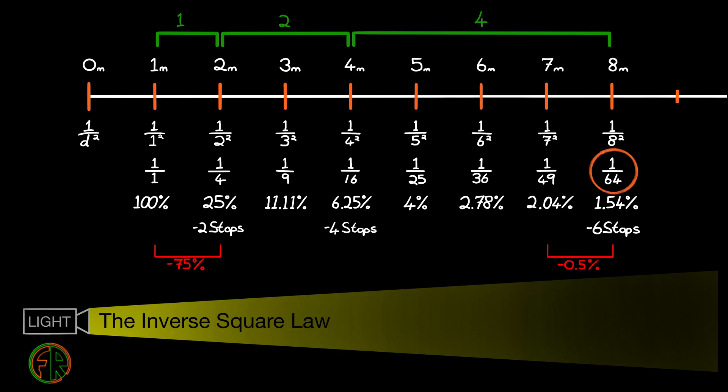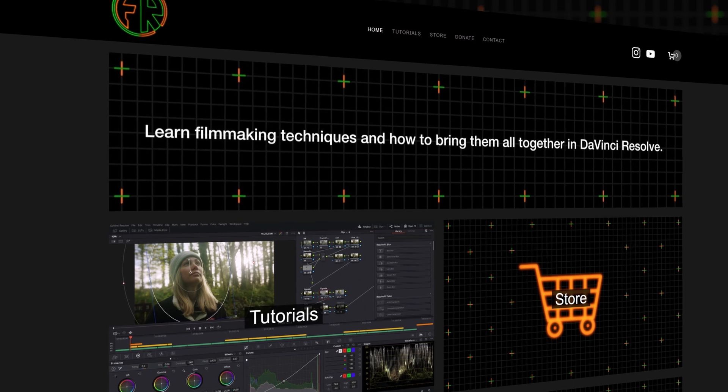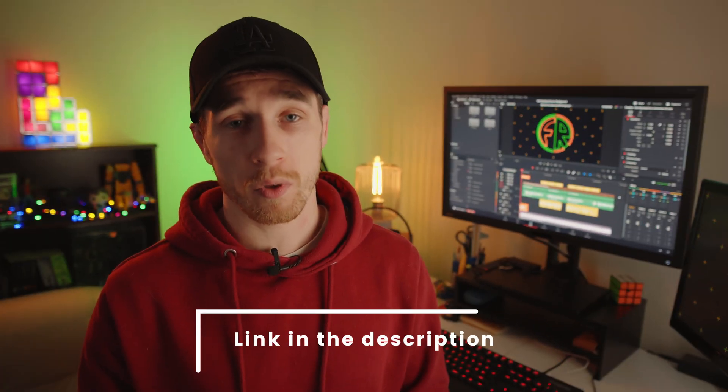Everything can also be reverse calculated. Say we have a non-dimmable light with no ND gel, so we cannot change its brightness. Our light is 8 meters from our subject, but our subject is one stop underexposed. We can gain back that stop by moving the light closer to the subject. If 1 over 64 is minus 6 stops and 1 over 16 is minus 4 stops, then 1 over 32 is minus 5 stops — that one stop difference we need. So the distance is the square root of 32, which equals 5.66 meters. A link to download this diagram for free is in the description.